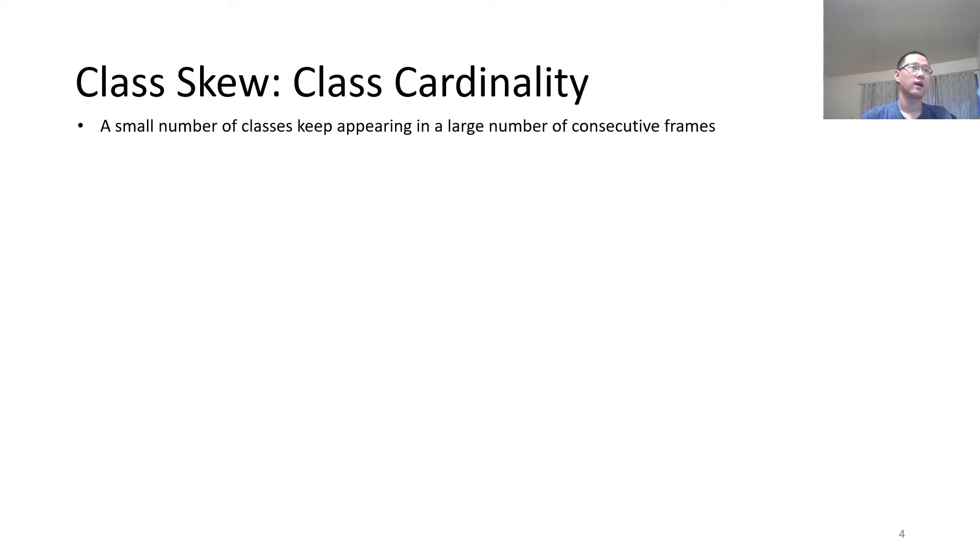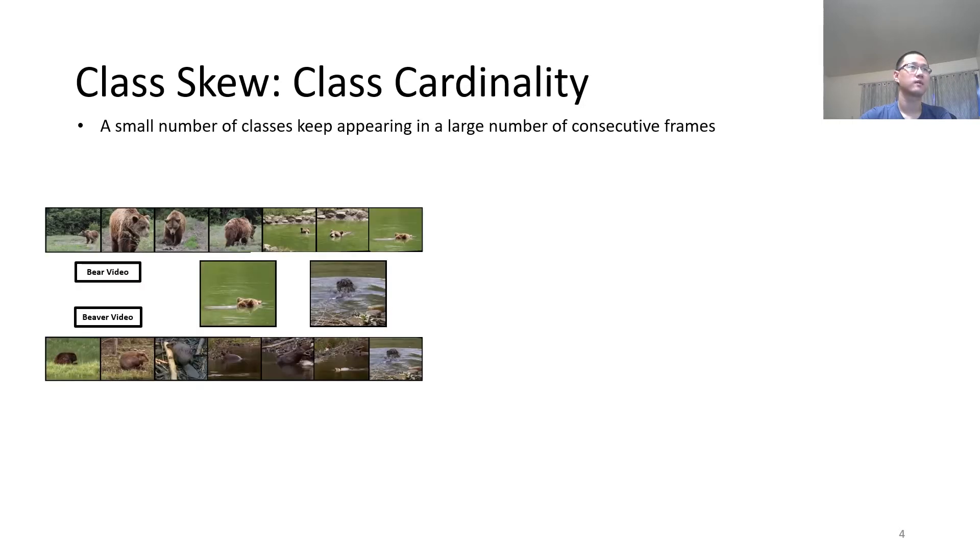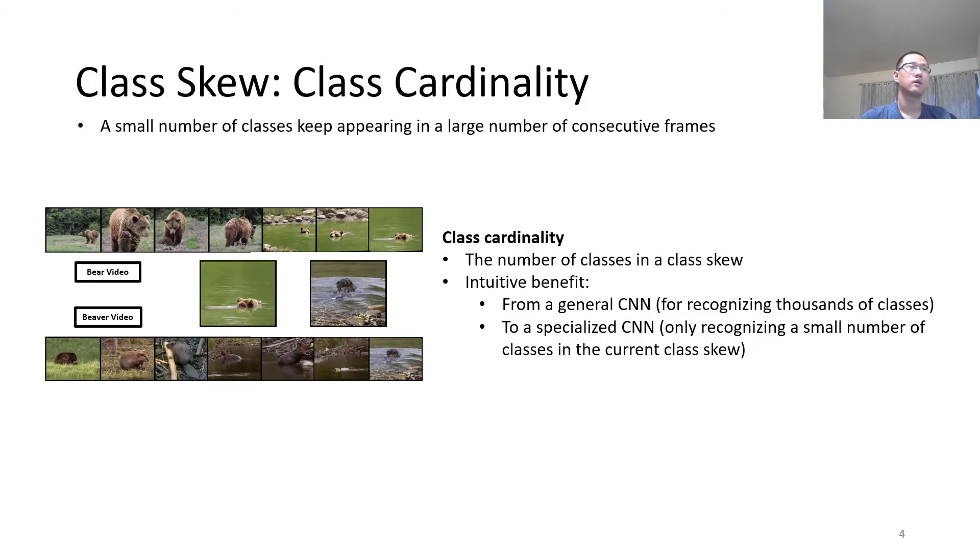We characterize class skews with two types of information. The first type is class cardinality. Class cardinality refers to the number of classes in a class skew. Intuitively, from a general CNN for recognizing thousands of classes, we can generate a specialized CNN to only recognize a small number of classes in the current class skew.